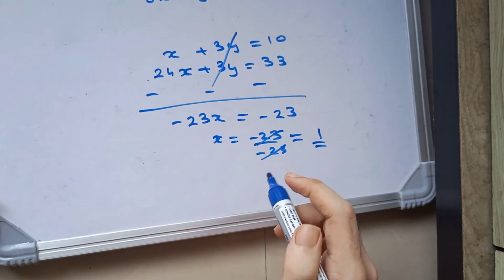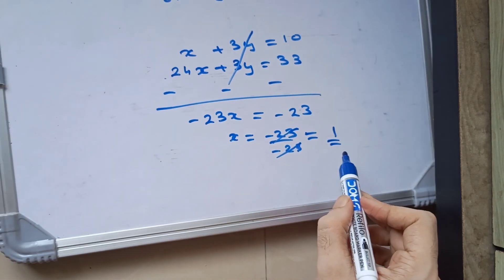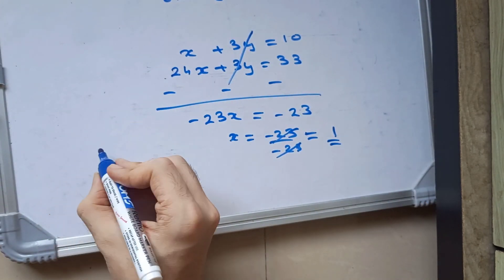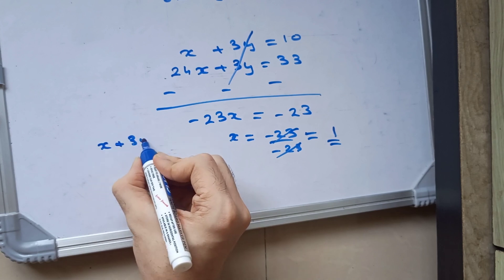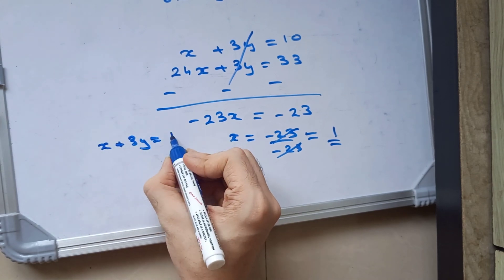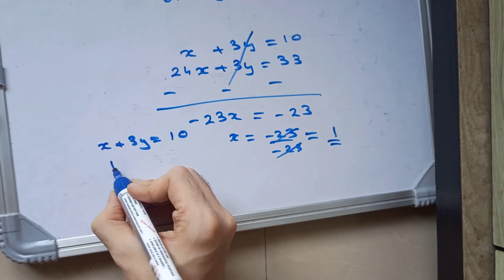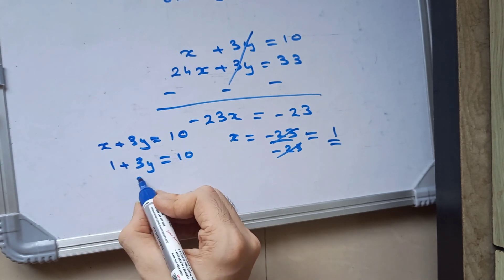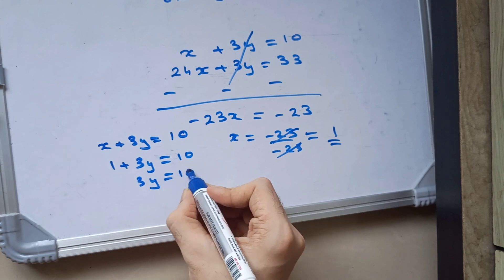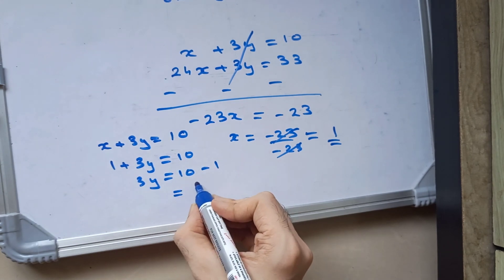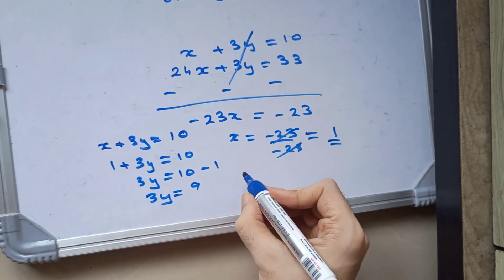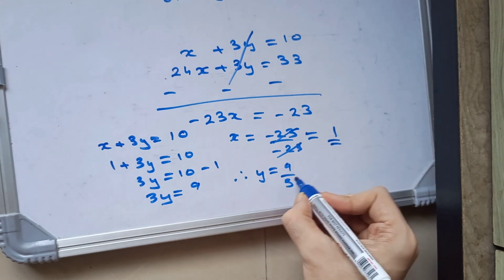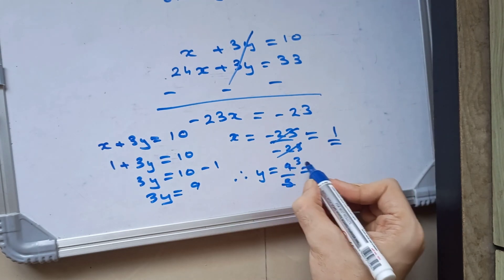Now we will substitute x equals 1 to find the value of y. We will substitute 1 in equation 3: x plus 3y equal to 10. Substituting the value of x, we get 3y is equal to 10 minus 1 which is equal to 9. Therefore y is equal to 9 upon 3, which is 3.